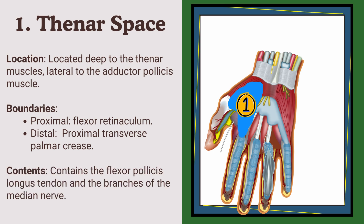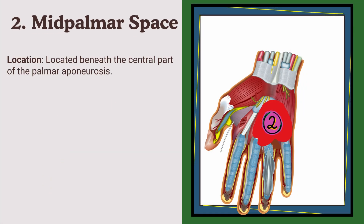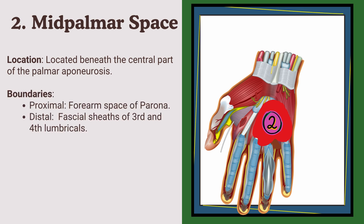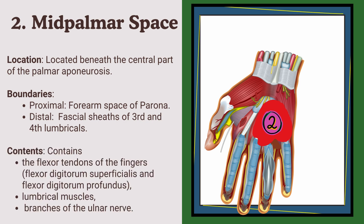The mid-palmar space. Location: it is located beneath the central part of the palmar aponeurosis. Boundaries: proximally it begins at the forearm space of Parona, distally it ends at the fascial sheaths of the third and fourth lumbricals. Contents: it contains the flexor tendons of the fingers — flexor digitorum superficialis and flexor digitorum profundus — lumbrical muscles, and the branches of the ulnar nerve.